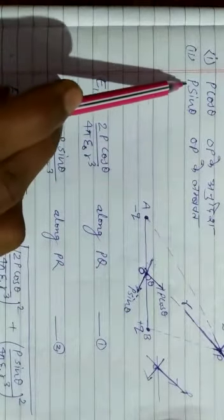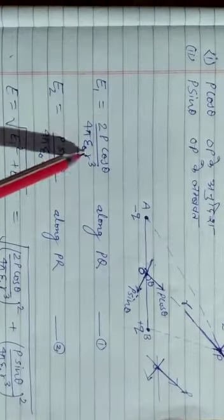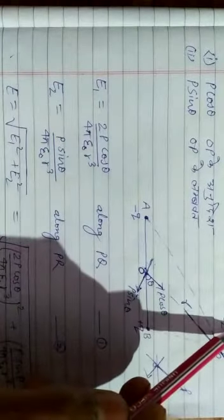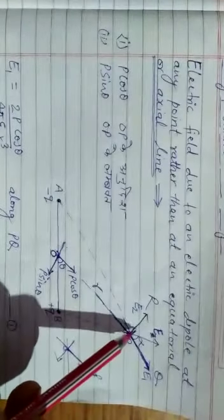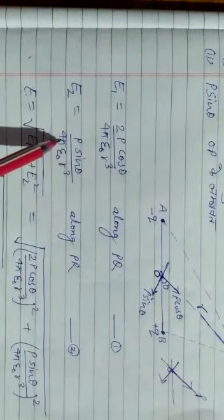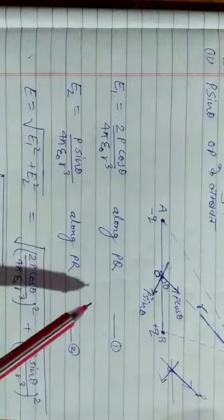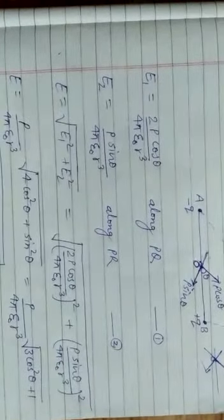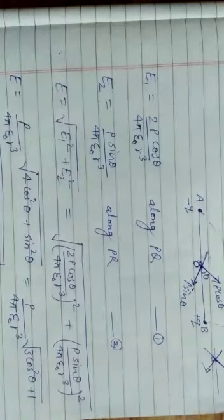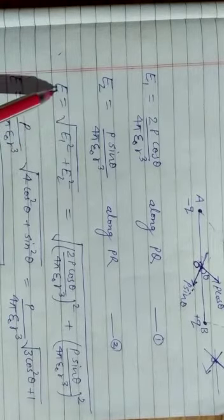लंबवत component अर्थात perpendicular component जो बनेगा P sinθ, वो यहाँ पर यूज किया जाएगा। तो हमारे पास इसके कारण जो electric field बनेगा E2, यह E2 equals P sinθ / (4πε₀ R³) along PR — P से R की ओर। अब अगर हम देखें तो E1 और E2 perpendicular हैं।